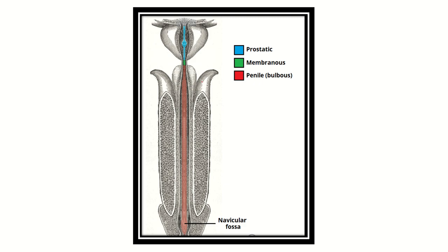Looking at this picture again — first, this is the prostatic urethra, which is present within the prostate. Then the membranous urethra, which is the narrowest part of the male urethra. The third part is the penile or spongy urethra, which is the longest part of the male urethra. Then the navicular fossa, and finally the urethral meatus.